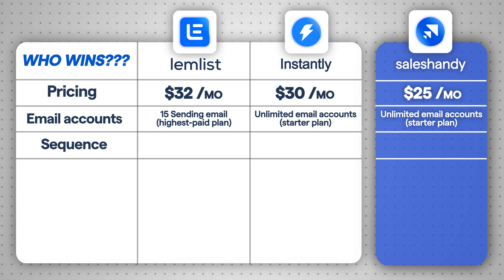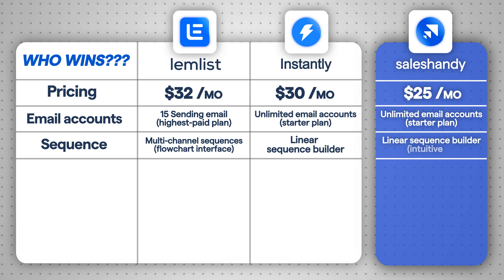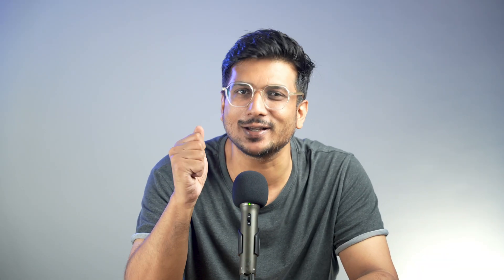Now comes the sequence part. Lemlist allows you to build complex multi-channel sequences with a neat flowchart interface, and it's great for visual thinkers. Instantly, on the other hand, keeps things simpler with a linear sequence builder, which is preferred by the majority of people. This is why Sales Handy also offers a simple linear sequence builder with an intuitive UI.